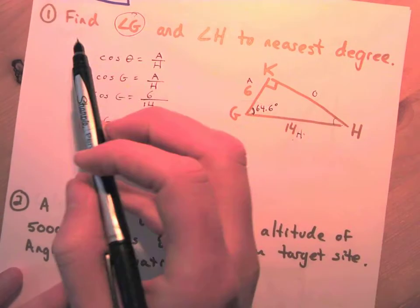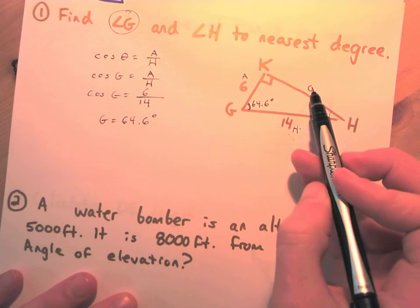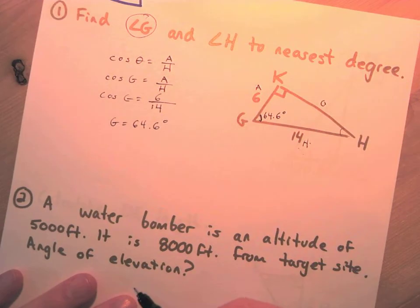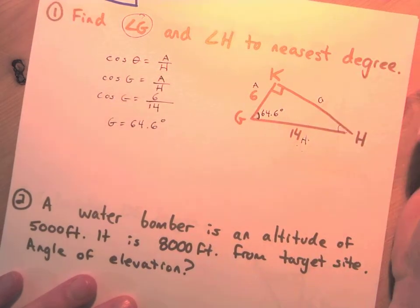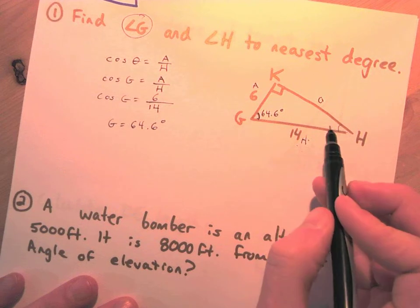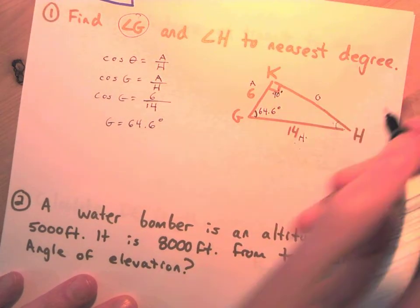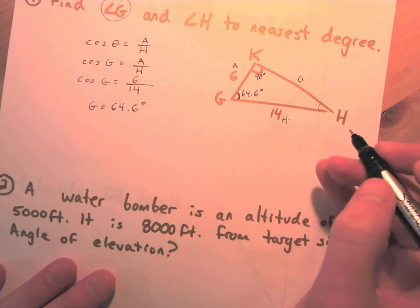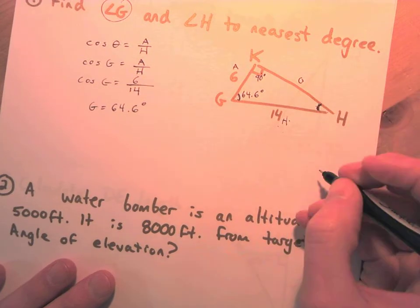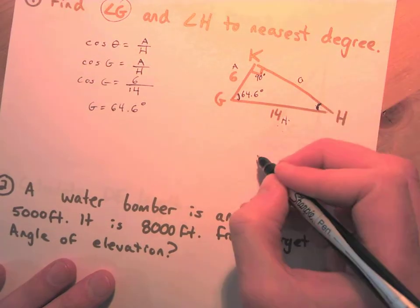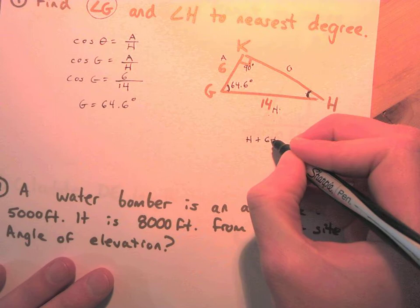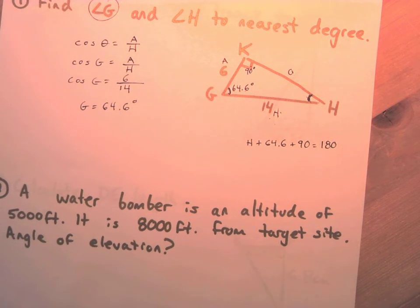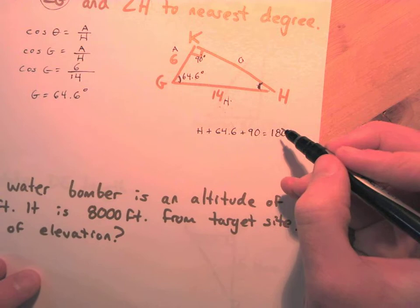Before in section two we would relabel and redo everything for angle H, but this time we're going to use a shortcut. All three angles plus 90 degrees always equal 180 degrees in every triangle. So if those three angles always sum to 180, we can make a little equation: H + 64.6 + 90 = 180 degrees.